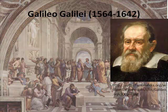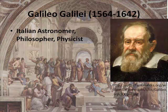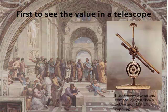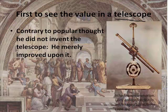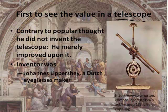Galileo Galilei, 1564 to 1642, was an Italian astronomer, philosopher, and physicist — he did everything. He was the first to see the value in a telescope. Contrary to popular thought, he himself did not invent the telescope; he just improved upon it. He made ones probably as good as binoculars people purchase today. The actual inventor was Johannes Lippershey, who was a Dutch eyeglasses maker.